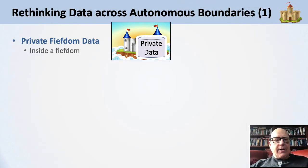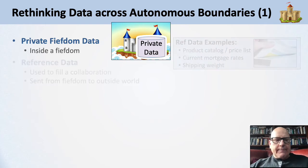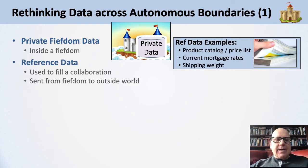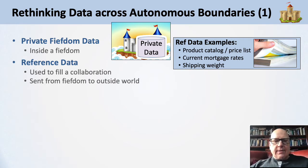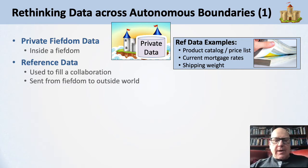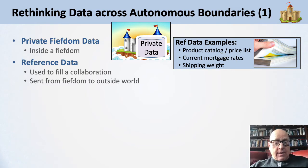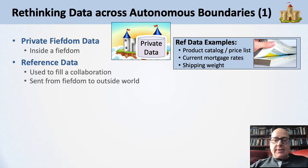Let's rethink data across autonomous boundaries. There is private data inside the fiefdom that can be updated transactionally and is contained within that boundary. There's also reference data used to fill out a collaboration, typically sent from the fiefdom to the outside world. Examples include a product catalog, a price list, current mortgage rates, and shipping weights and costs — information published that talks about what it means to work with the autonomous company across this autonomous boundary.